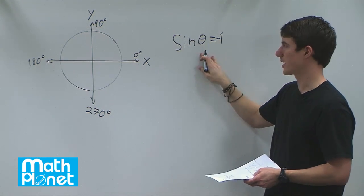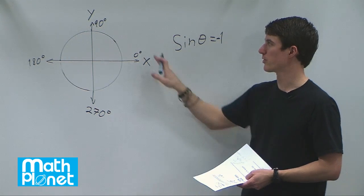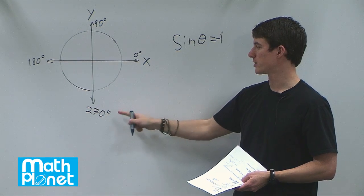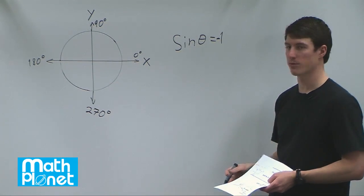So if we have sine of theta equals negative one, can we use the unit circle to determine which angle on here would give us the value of negative one?